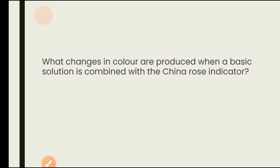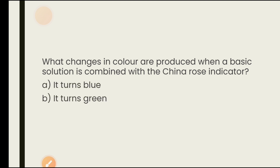What color change is produced when a basic solution is combined with the China rose indicator? Options are it turns blue, it turns green, it turns dark pink, no changes. The answer is it turns dark pink — China rose turns dark pink with a basic solution.